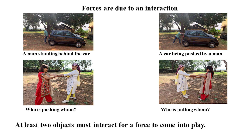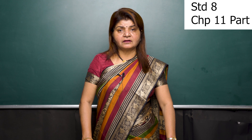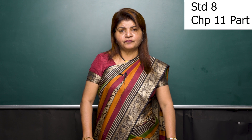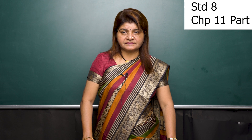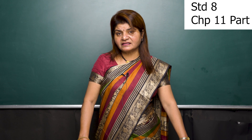In the picture, a man is standing behind a car — the car will not move. In the second picture, the car is being pushed by the man, so the car will move in the direction of the applied force. In the third case, girls are pushing each other, and in the fourth picture, both girls are pulling each other. From these examples we can infer that at least two objects must interact for a force to come into play.